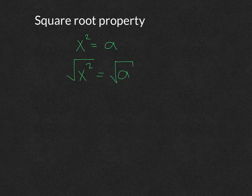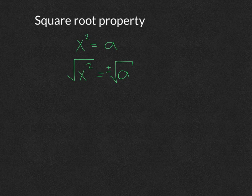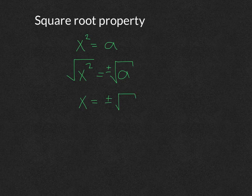However, if you take the square root of a constant that is involved in an equation, you must include a plus or minus. So that means x would equal plus or minus the square root of that number.